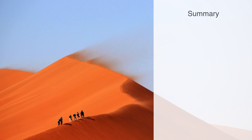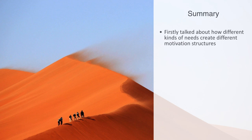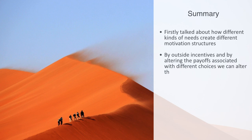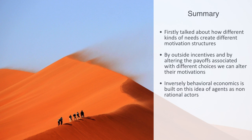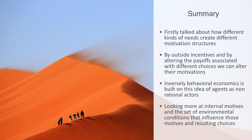In this short module, we've been talking about incentive systems within economics. We firstly talked about how different kinds of needs create different motivational structures. We looked at the standard approach to influencing people's choices through incentive theory, which suggests that agents are pulled into action by outside incentives and that by altering the payoffs associated with different choices, we can alter their motivation. Inversely, behavioral economics — built on the idea of agents as non-rational actors — tries to understand how people act in the real world, looking more at internal motives and the set of environmental conditions that influence those motives.